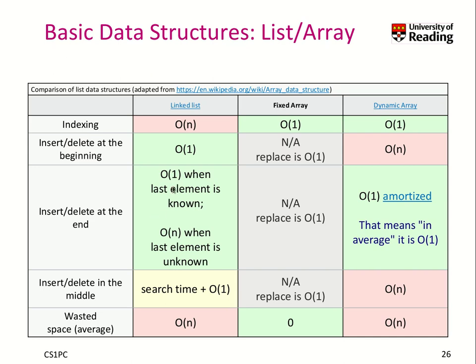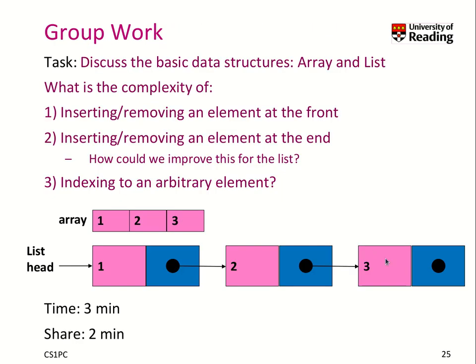Insert and deletion can be O of 1 when we store a pointer to the last element. There are a lot of list variants. Instead of just keeping a pointer to the head, we can also keep a pointer to the tail of the list, which allows us to implement a first-in, first-out list very performantly — instead of iterating through all the elements, it's just yet another pointer.